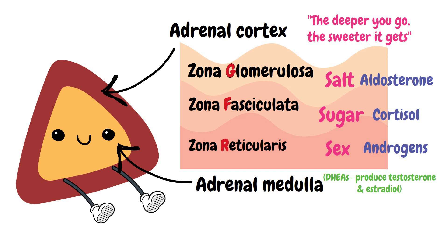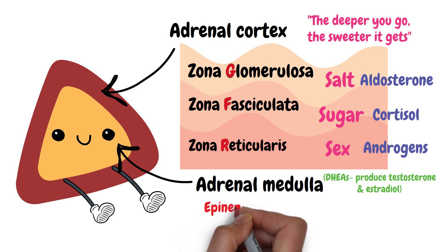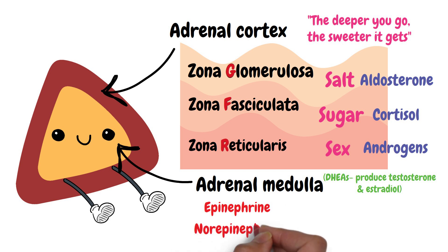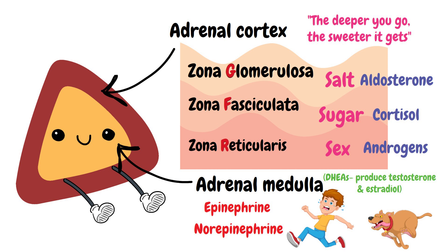The medulla of the adrenal gland produces epinephrine, also known as adrenalin, and norepinephrine, also known as noradrenaline, that initiates the activities of the sympathetic nervous system, which is the fight-or-flight response of your body.